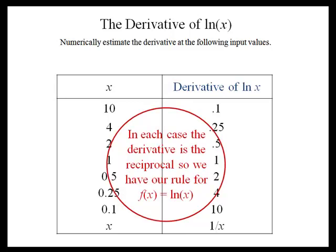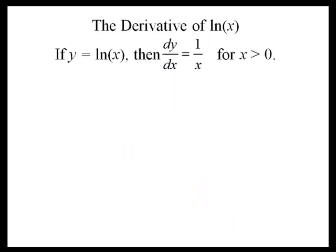This gives us our rule for the derivative of the ln of x. In each case, we're just taking the reciprocal. So our rule is that the derivative of ln of x is 1 over x.